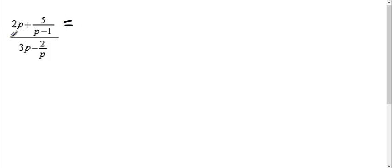So first I need to deal with the top and the bottom separately. For me to add these together, I need to find a common denominator. My common denominator would be p minus 1. Since this first fraction was missing the p minus 1, I need to multiply this whole thing by p minus 1.